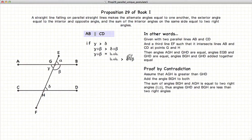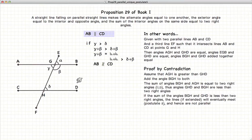So if gamma plus beta is 180 degrees, then 180 degrees would have to be greater than delta plus beta. Well, if delta plus beta is less than 180 degrees, according to Postulate 5, AB and CD are not parallel. Since we started with the assumption that AB and CD are parallel, this statement that gamma is greater than delta cannot be true.